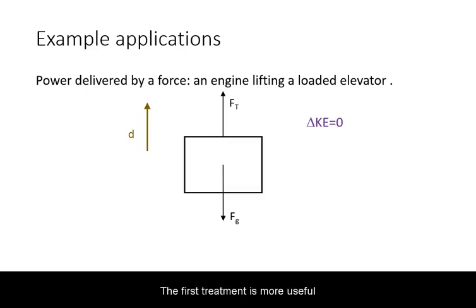The first treatment is more useful when, for example, you need to design an engine and need to know at what rate it delivers work. In this example, we have an engine lifting an elevator at constant speed, so it needs to deliver work against gravity.